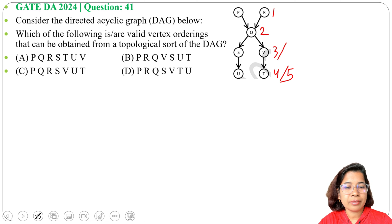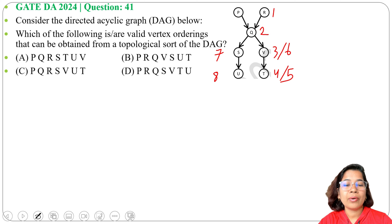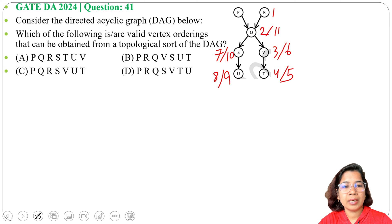V has no adjacent left, so finishing time for V is 6. Then we backtrack to Q — Q has adjacent left. From Q we will visit S, start time will be 7. From S we will visit U, start time will be 8. Now U is the dead end, so finishing time is 9. Then S is the dead end, finishing time will be 10. Then Q is the dead end, finishing time will be 11. Then R has no adjacent left, so finishing time is 12.